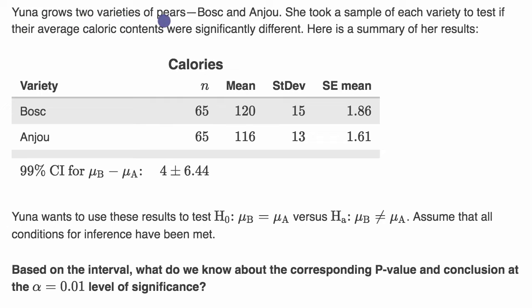Yuna grows two varieties of pears, Bosc and Anjou. She took a sample of each variety to test if their average caloric contents were significantly different. Here is a summary of her results.